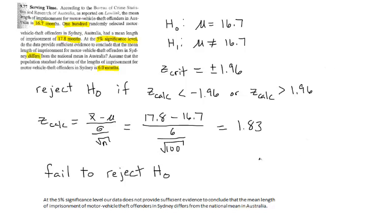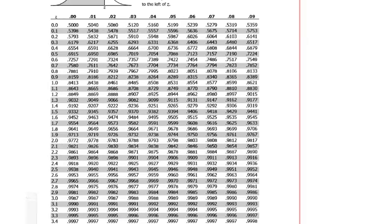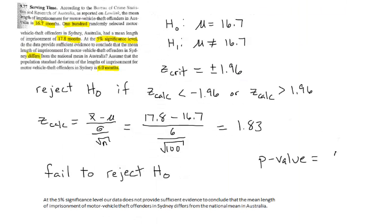The last thing we are going to do is find our p-value. We go to our Z table and look up 1.83 — down to 1.8 and over to 3 — and find 0.9664. The table always reads left, so since we are looking at greater than, we do 1 minus 0.9664. Because this is a two-tailed test, we multiply by 2, giving a p-value of 0.0672. Since our p-value is greater than our significance level of 0.05, it confirms that our data does not show significant evidence that the mean imprisonment time is different.